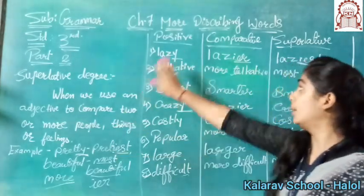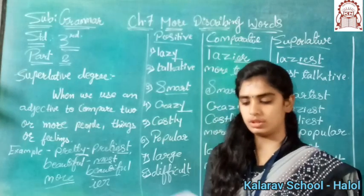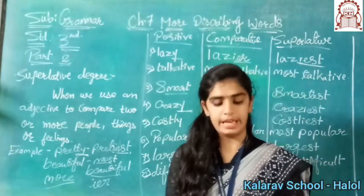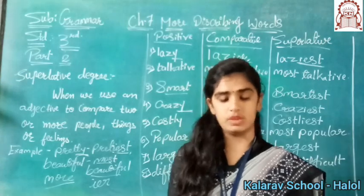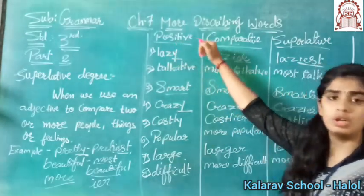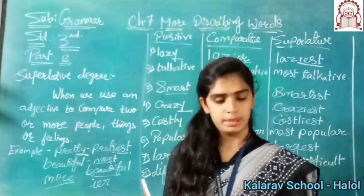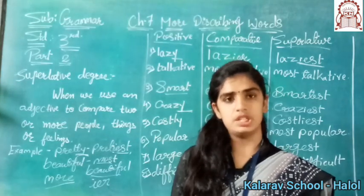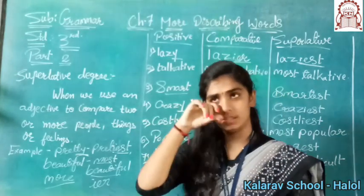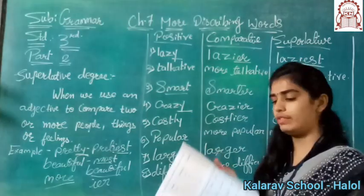Now are you clear with comparative and superlative degree, children? So now turn the page and take out page number 34. Here the heading is C: underline the correct degree of comparison in the given sentences. From the bracket we have to choose which degree is proper — positive, comparative, or superlative. See the first number: 'This is the ___ dress in the shop,' with options cheap, cheaper, and cheapest. Since we are talking about only one thing in the shop, it will be positive degree, so we take 'cheap.'